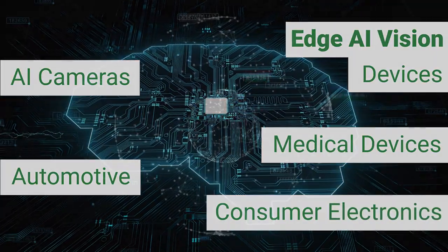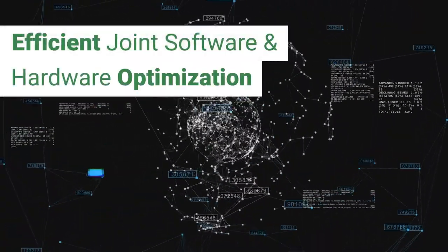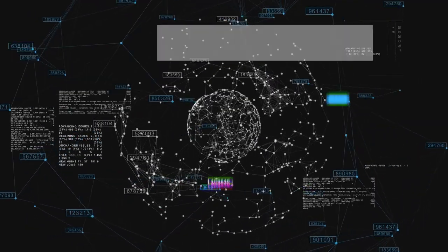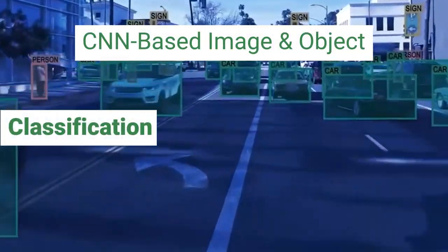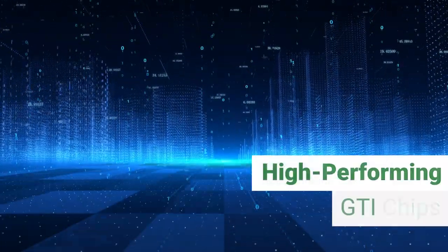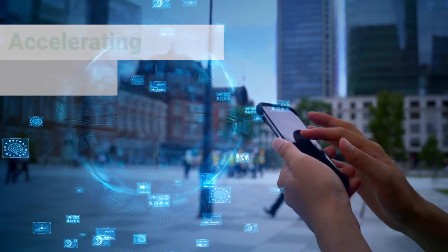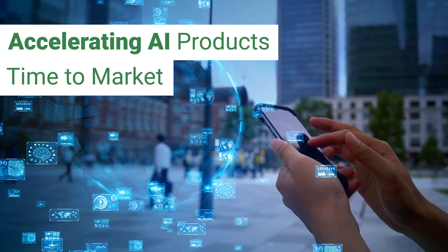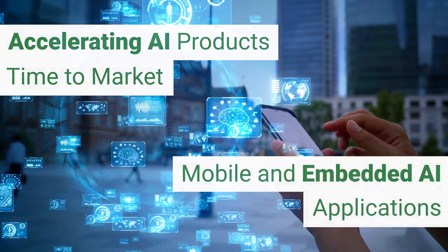AIX provides an efficient joint software and hardware optimization for developing your CNN-based image or object classification, object detection, or object segmentation specifically for high-performing GTI chips. AIX is particularly beneficial to industries and SMEs who are interested in accelerating their AI products' time to market, uniquely designed for mobile and embedded AI applications.